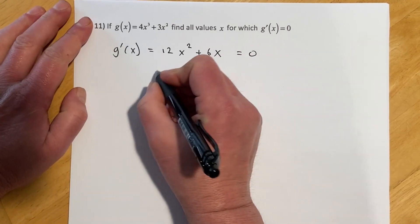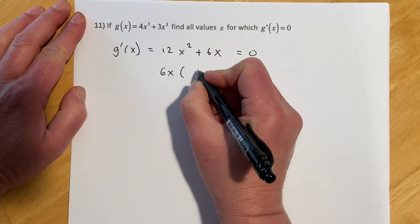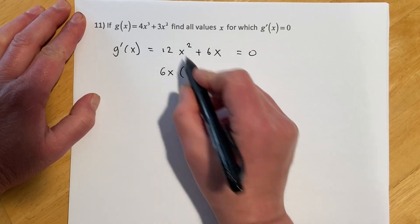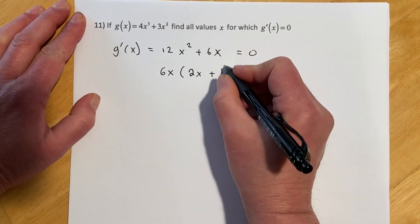And now I'm trying to figure out where this equals 0, so I can set that to 0. And best way to do that's going to be factoring, so we're going to take out a 6x, that's our common factor. It'll leave us a 2x, 6 times 2 is 12, x times x is x squared, and then plus that 1 placeholder.